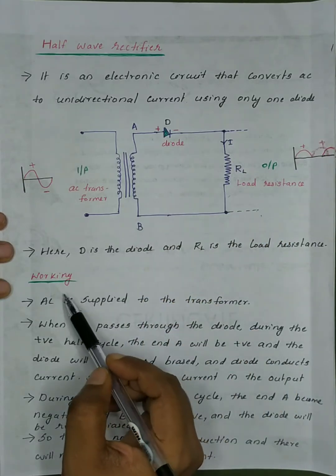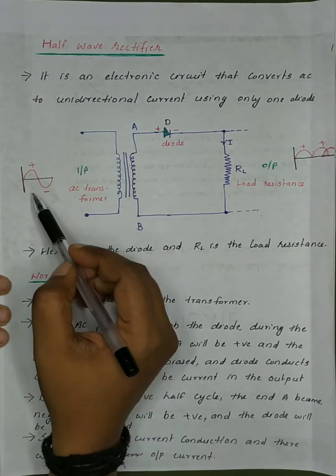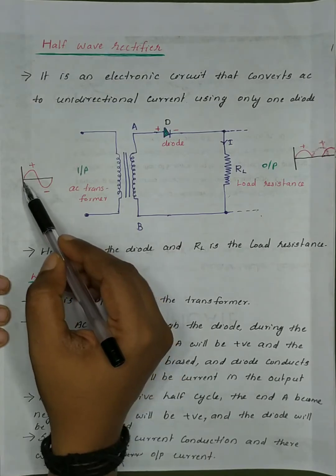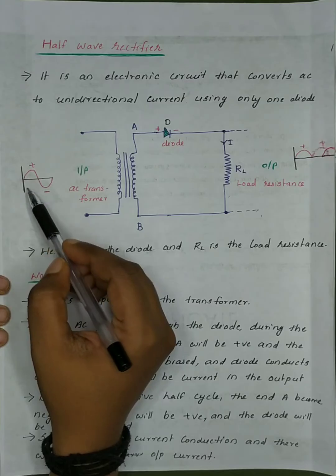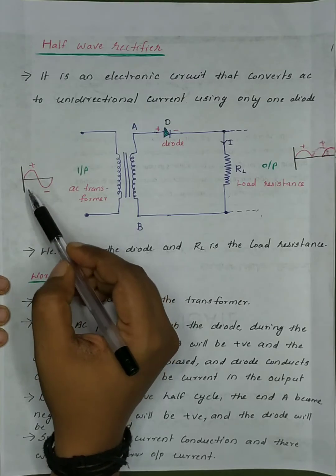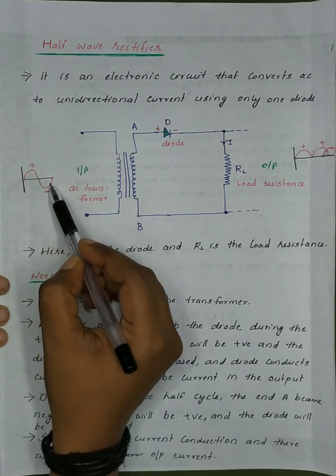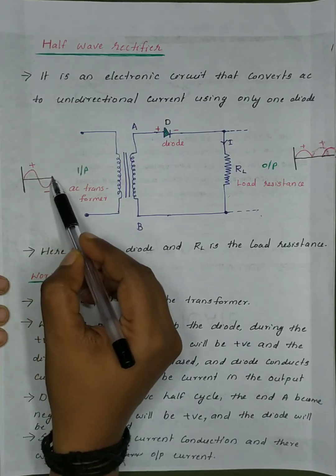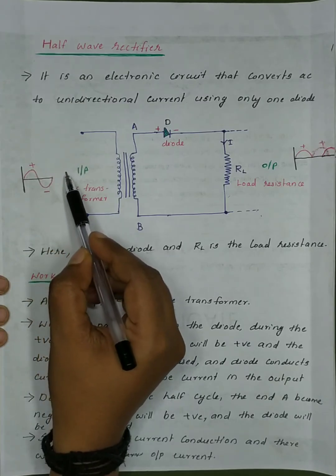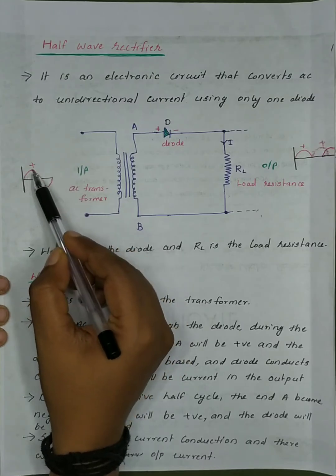This is our working principle. We use AC, which is an alternating current. There is a positive half cycle followed by a negative half cycle, alternating continuously.